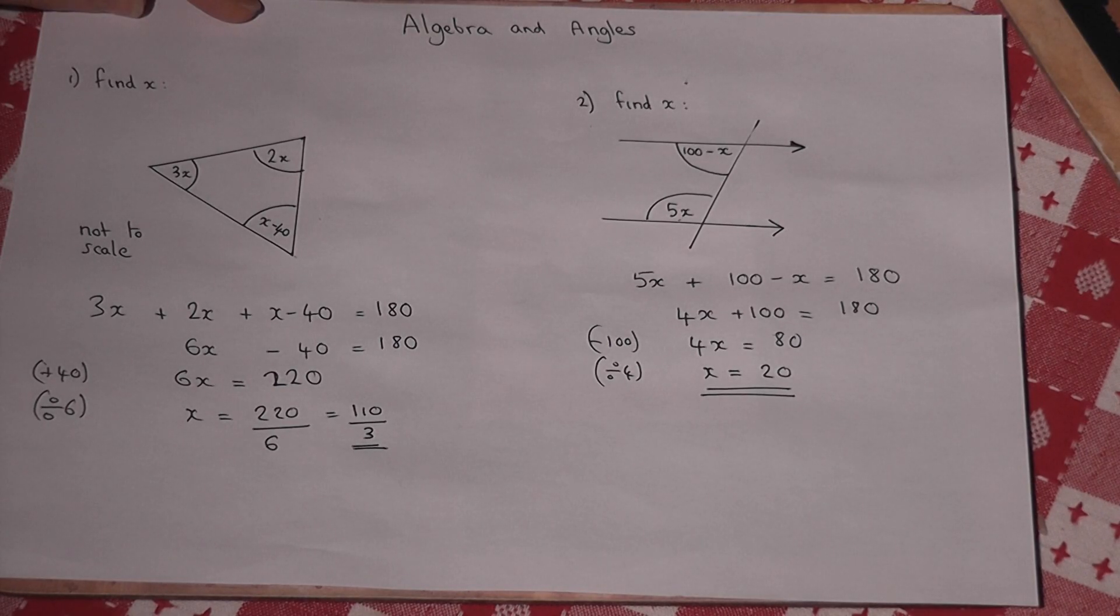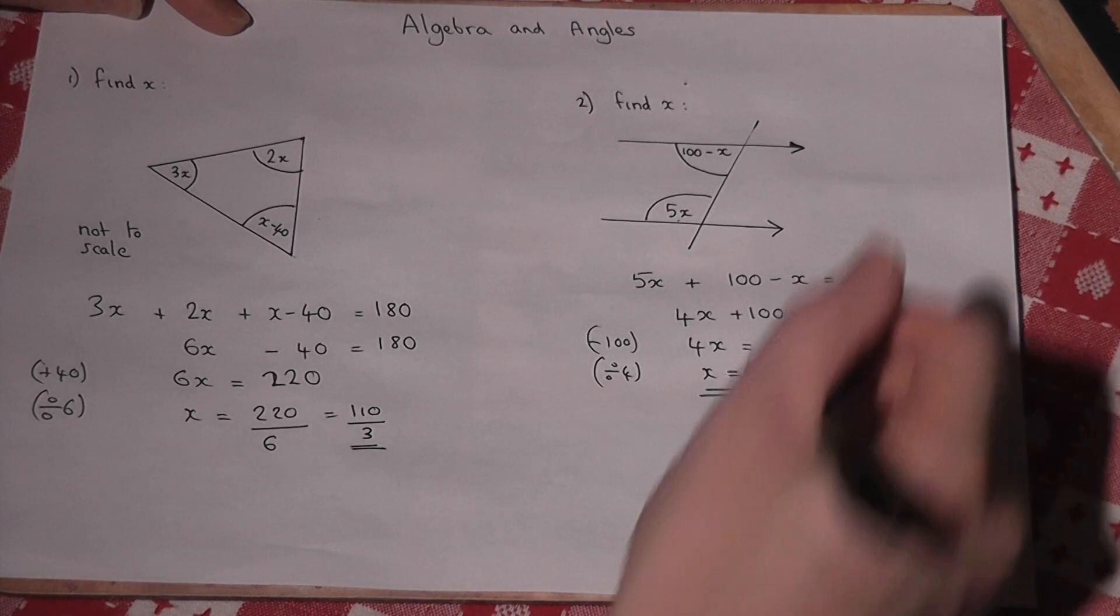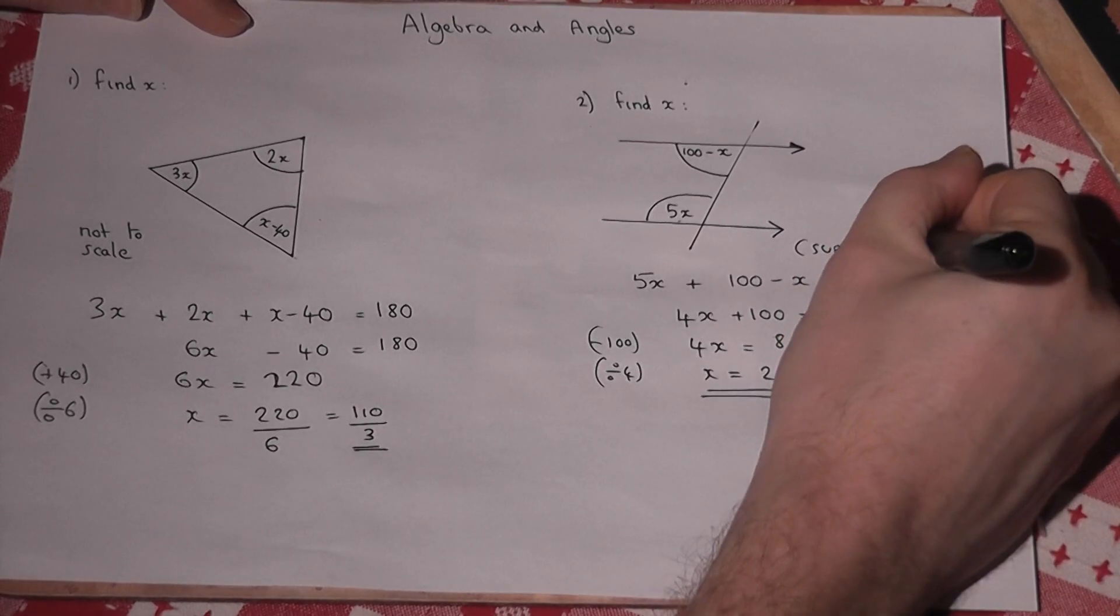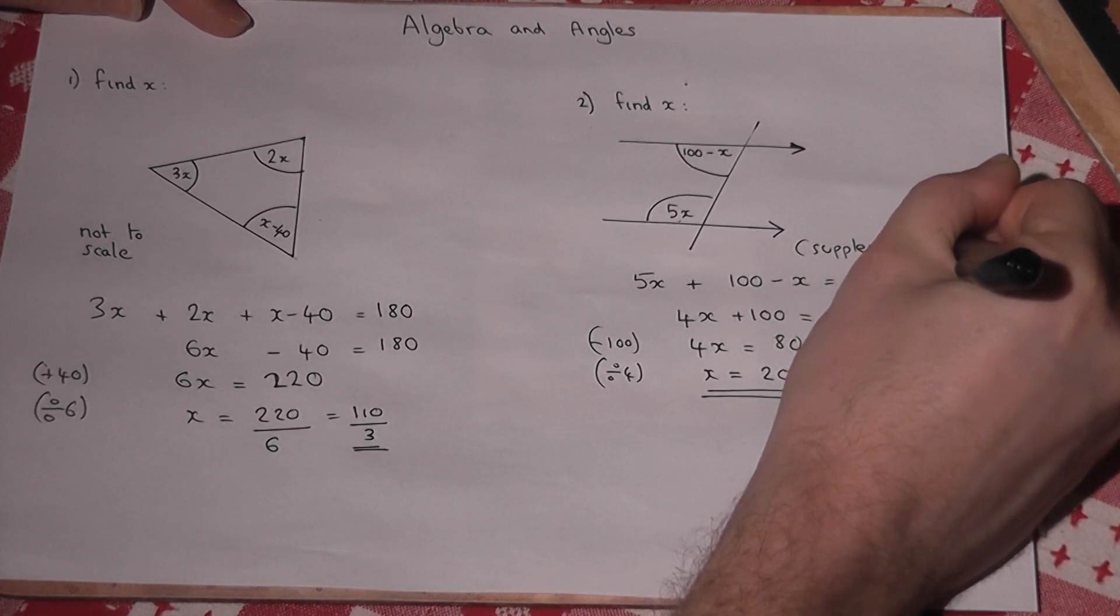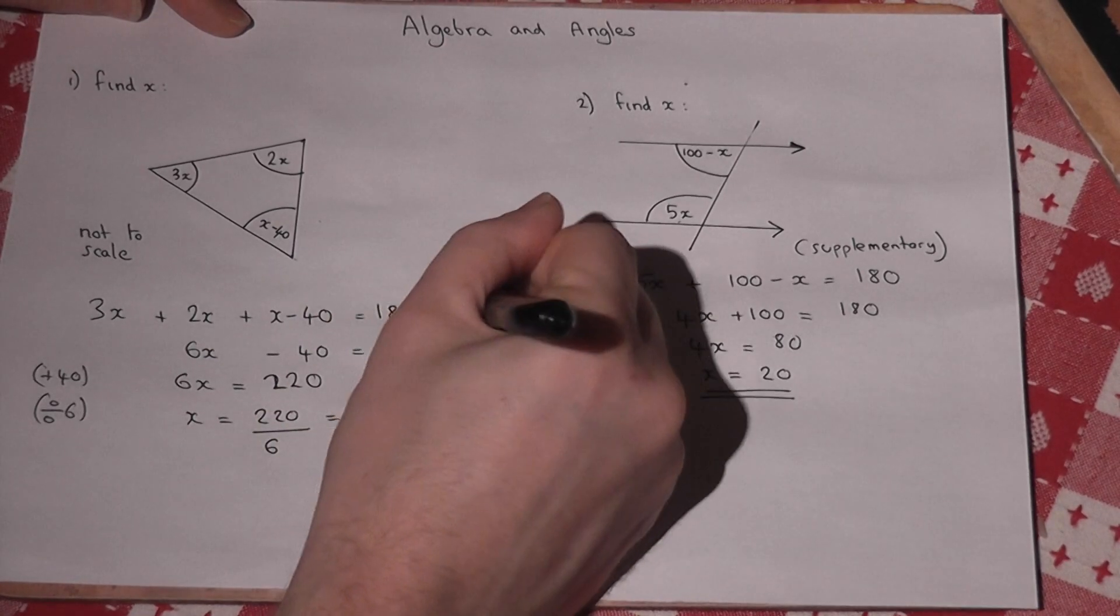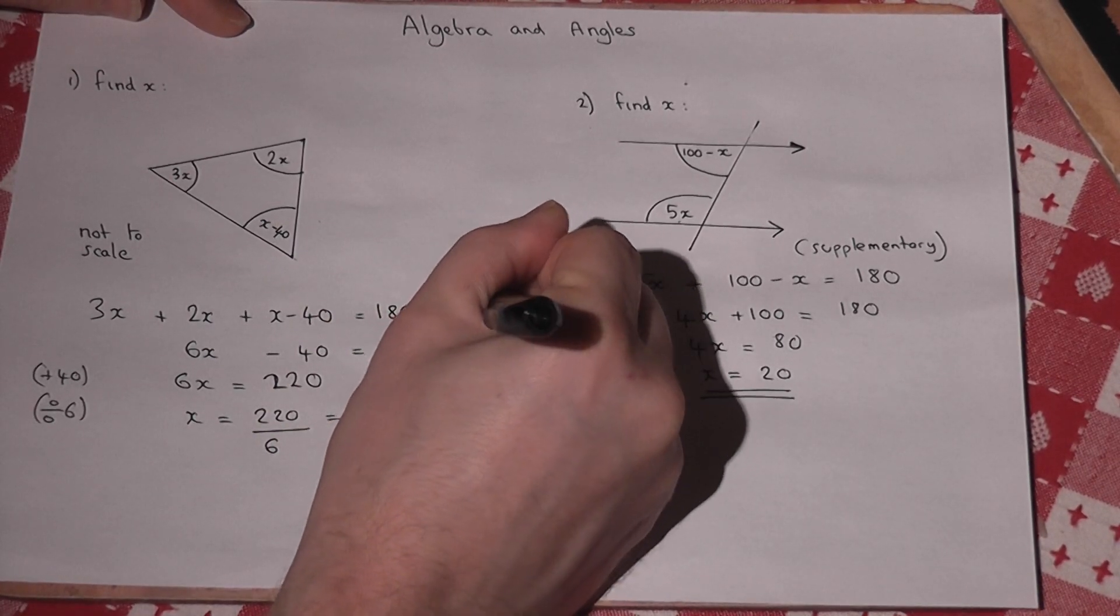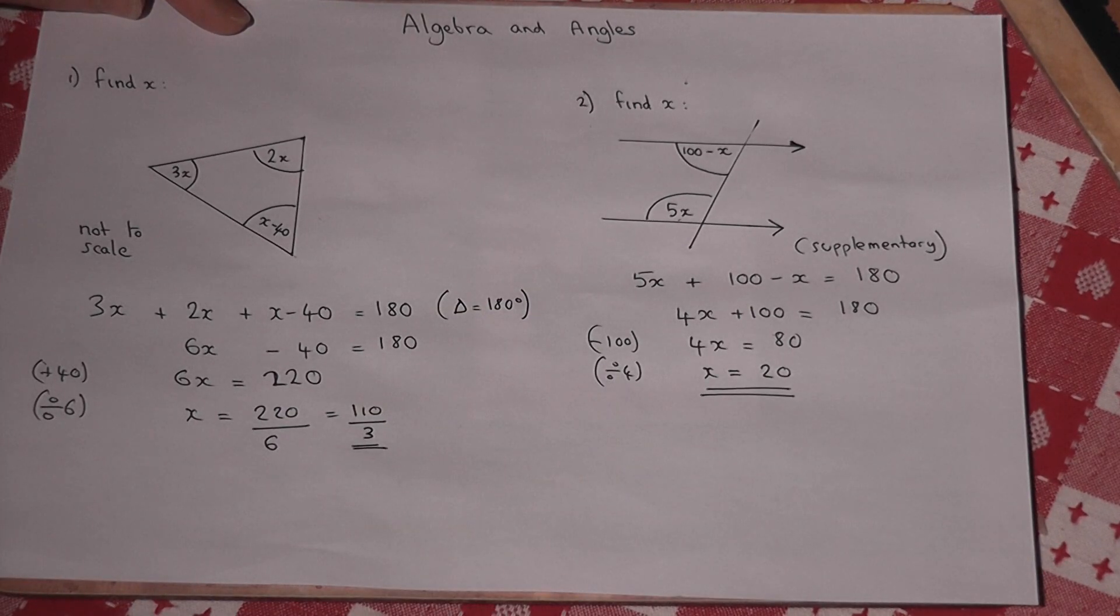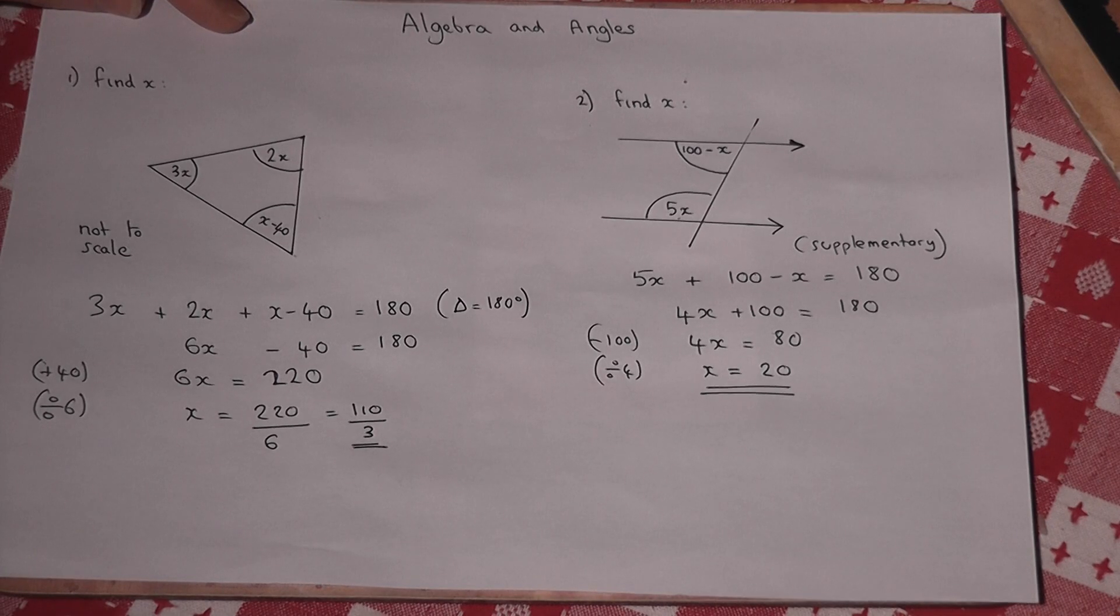Now it's normally good practice in the exam to explain your logic a bit more carefully. So this fact here about 180 can be referred to as supplementary angles. And often you'll put in brackets the reason for that. Just as in the first example, you may put triangle equals 180 degrees. And that extra step is often required to get the full marks in the exam.